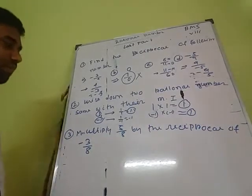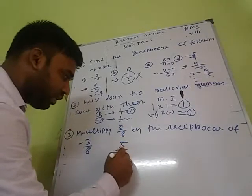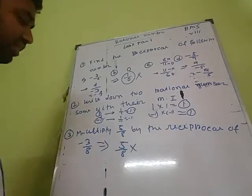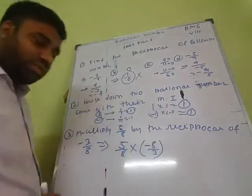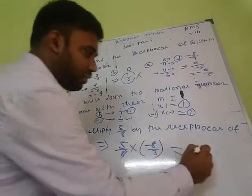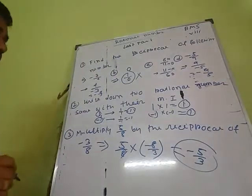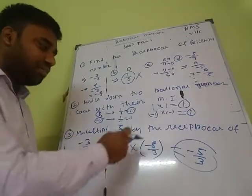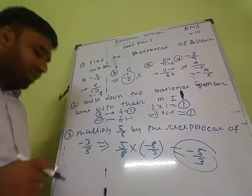Question number 3: multiply 5 by 8 by the reciprocal of minus 3 by 8. The reciprocal of minus 3 by 8 is minus 8 by 3. Now the product of 5 by 8 and minus 8 by 3 gives minus 5 by 3. So the result is minus 5 by 3.